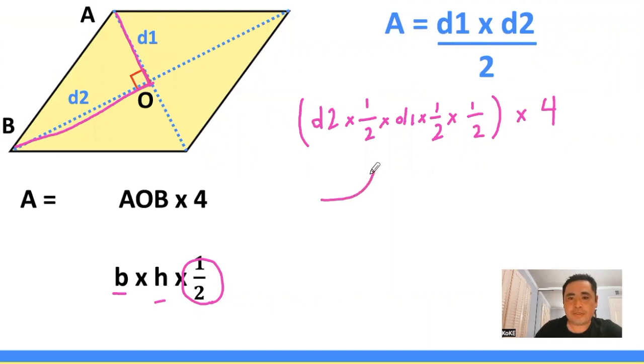Now, if we clean up this formula a little bit, we can get our diagonal 1 times diagonal 2, and then multiply all the fractions together to get 1 eighth. And then you have your times 4 here for the triangles.